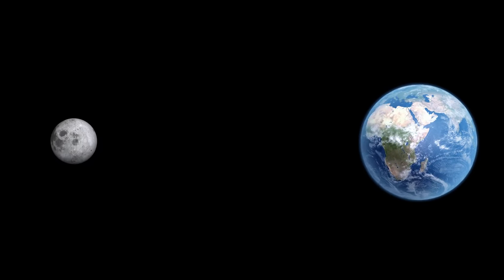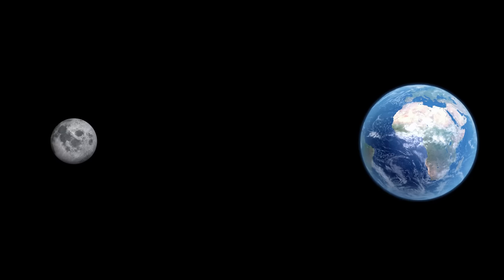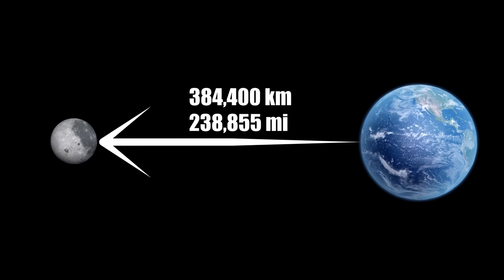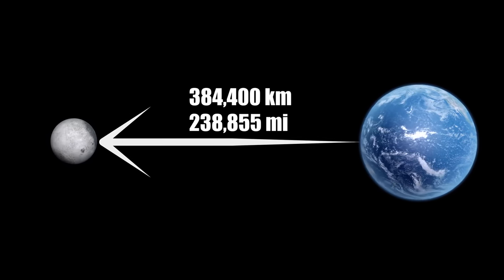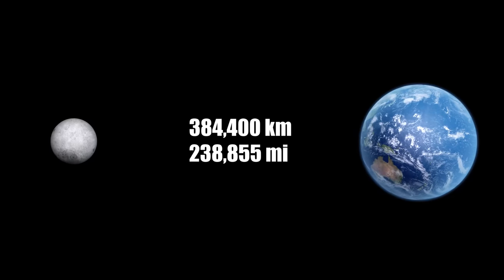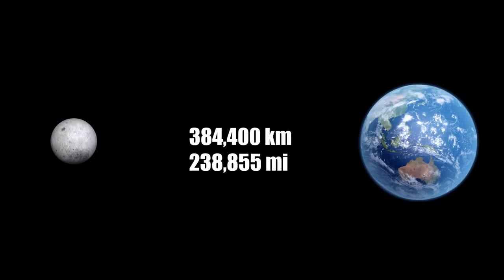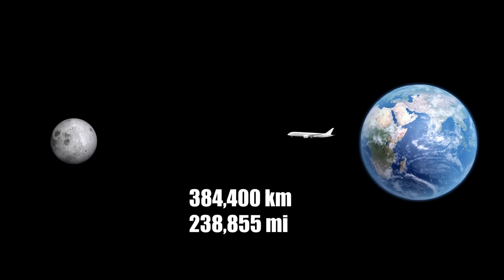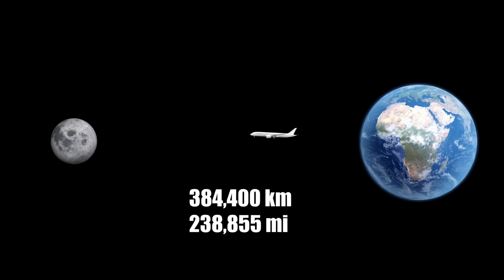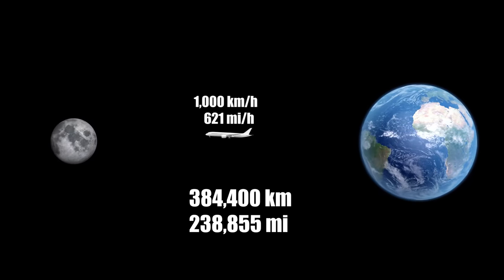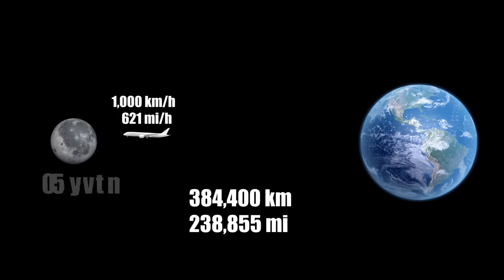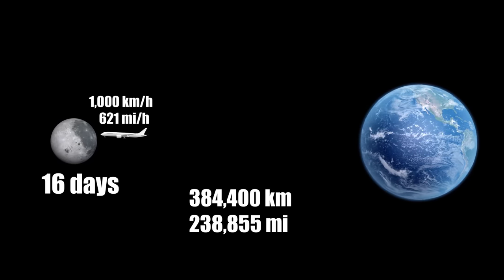Our first stop is surprisingly close, yet profoundly significant, our very own moon. Positioned a mere 384,400 kilometres from Earth, this distance may seem vast to us, yet it's but a tiny step on the cosmic scale. To put this into perspective, imagine boarding an airplane cruising at a steady speed of 1,000 kilometres per hour. On a direct flight to the moon, it would take approximately 16 days of continuous travel to reach the lunar surface.